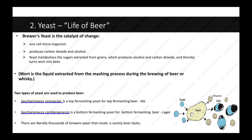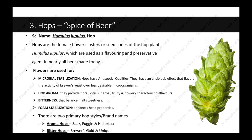The third most important ingredient is hops. Hops are the female flower clusters or seed cones of the hop plant Humulus lupulus, used as a flavoring and preservative agent in nearly all beers made today. They are used for microbial stabilization — hops have antiseptic and antibiotic qualities that favor the activity of brewer's yeast over less desirable microorganisms. Hops provide floral, citrus, herbal, fruity, and flowery characteristics to beer, bitterness that balances malt sweetness, and foam stabilization that enhances head properties. Two primary hop styles are aroma hops (e.g., Saaz, Fuggle, Hallertau) and bitter hops (e.g., Brewer's Gold and Unique).